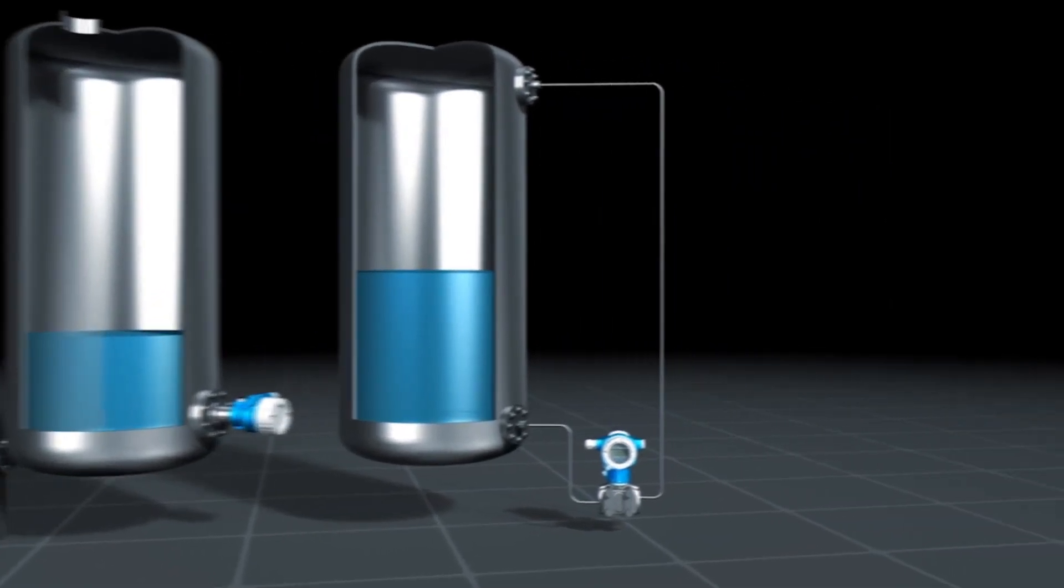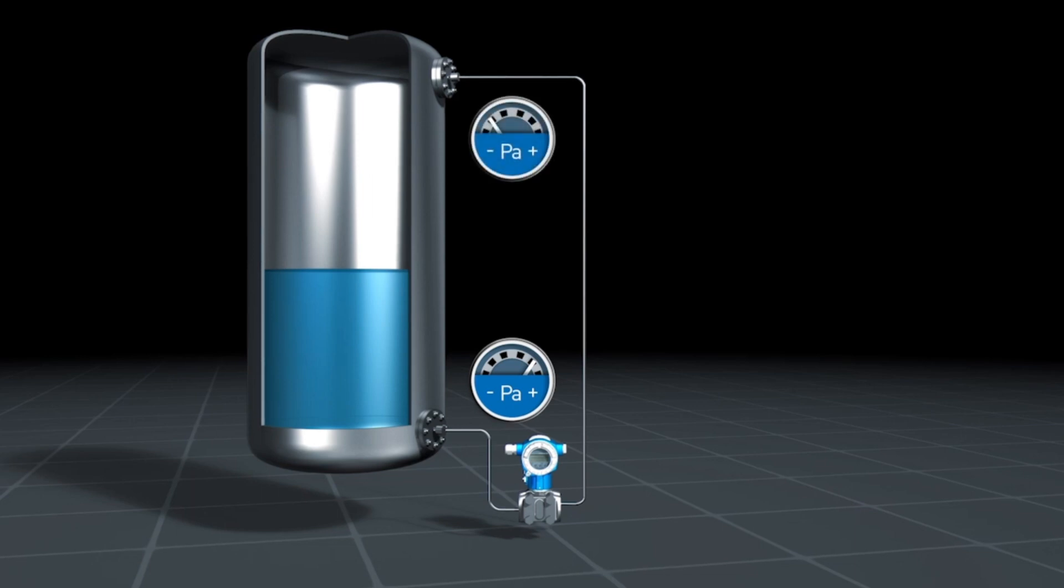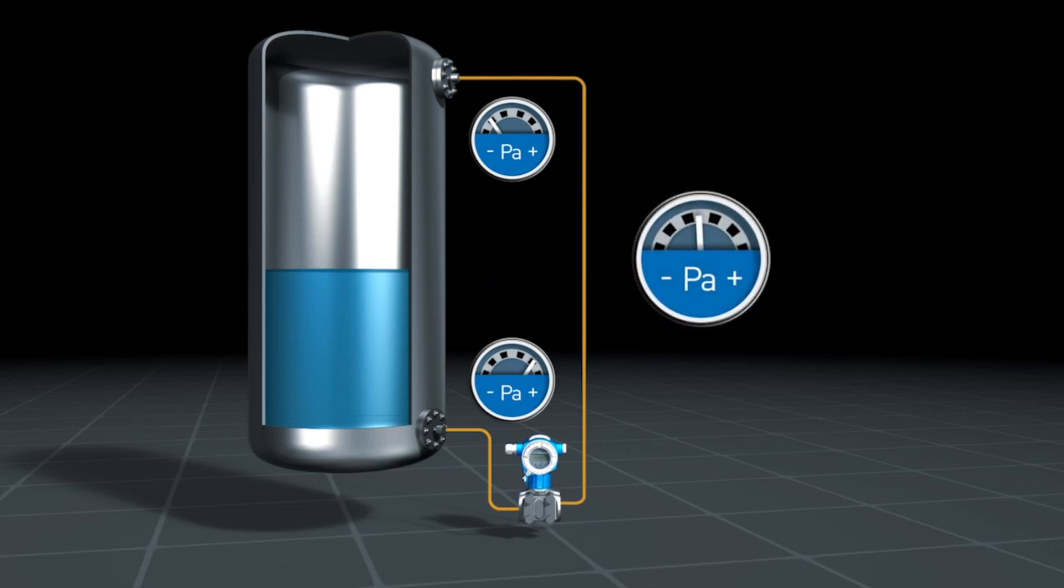In differential pressure measurement in a closed tank, the atmospheric pressure is of no consequence for level measurement. Apart from the pressure of the liquid column, the pressure head above the level is also measured. Both values are transferred to the transmitter via oil-filled capillary lines. The transmitter calculates the difference between both pressures and determines the level in the tank from this value.